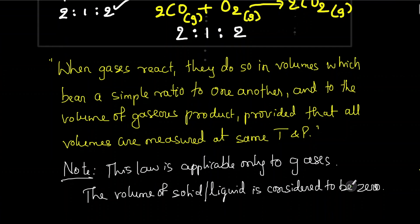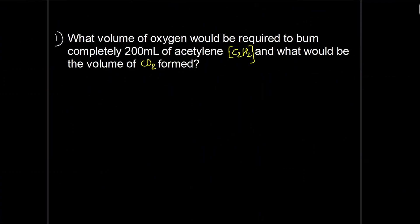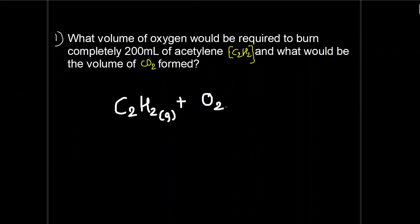First numerical: what volume of oxygen would be required to burn completely 200 ml of acetylene (C2H2), and what would be the volume of CO2 formed? First step: write a balanced equation. Identify reactants and products. Oxygen and acetylene are both reactants; CO2 is in the products. Remember, hydrocarbons — compounds containing carbon and hydrogen like acetylene, ethane, methane — when they undergo combustion, they produce water and CO2.